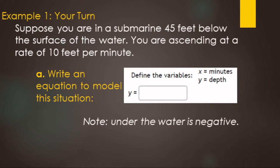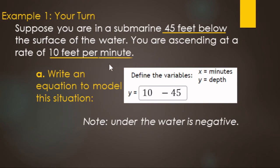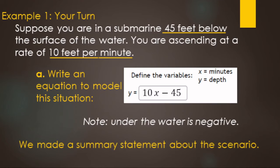Remember that below the water is negative. We're starting 45 feet below the surface, so that's negative 45. Written in slope-intercept form, ascending at 10 feet per minute gives us: Y equals 10X minus 45. So Y is depth, X is minutes, and we're going up 10 feet per minute starting 45 feet below.